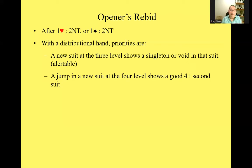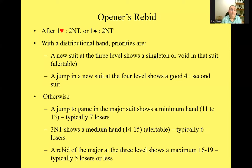You bid the suit in which you have the singleton. Otherwise, if you bid a new suit at the four level, that shows a good second suit. In most descriptions of this convention, written from the point of view of people playing five card majors, it says the second suit should be a five card suit. However, if you're playing ACOL where your original suit could be a four card suit, a more reasonable interpretation is that it should be at least a good four card suit.